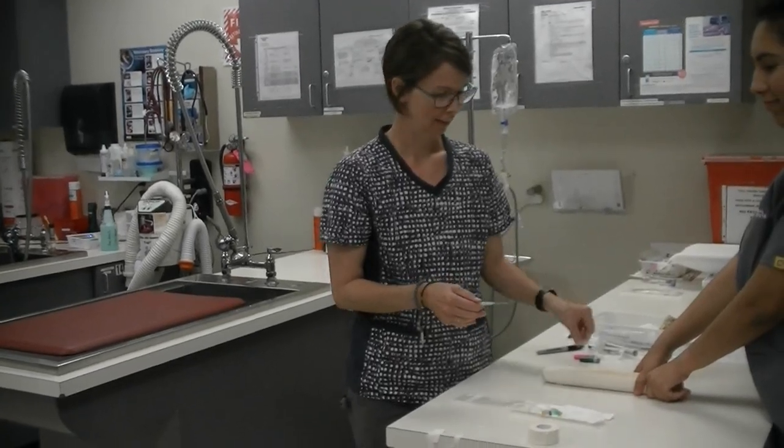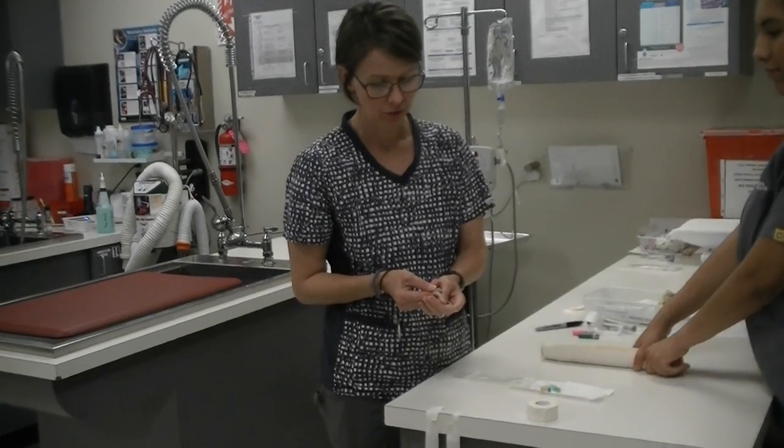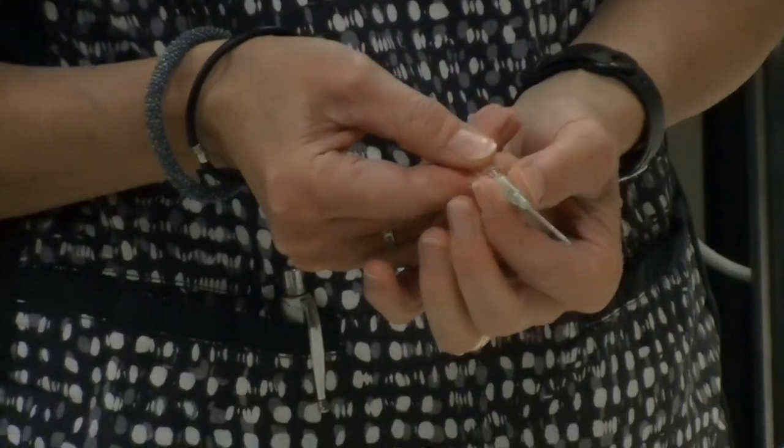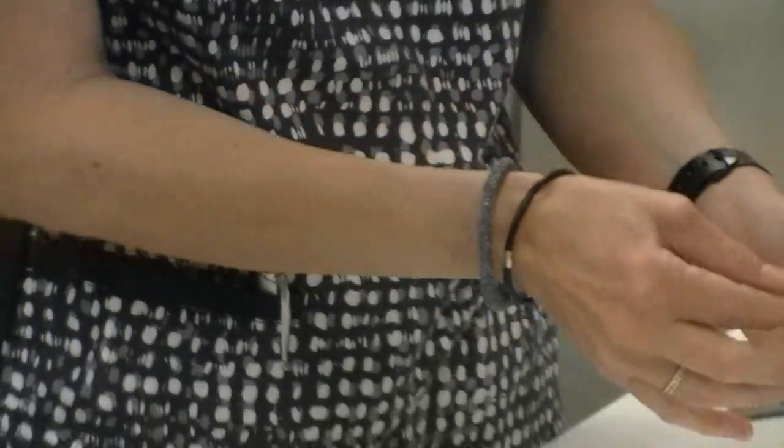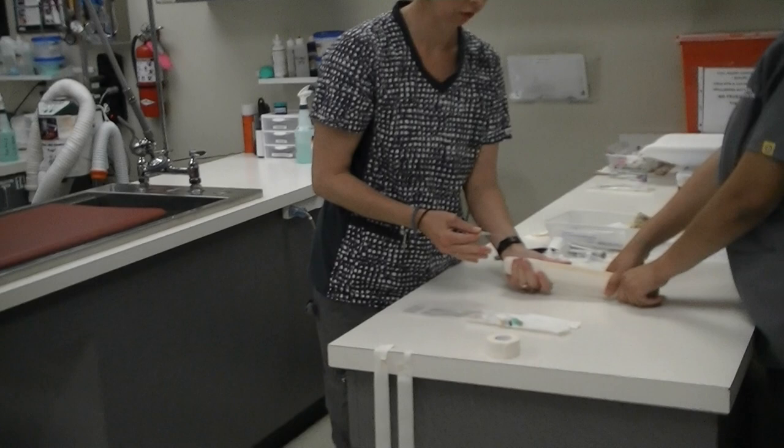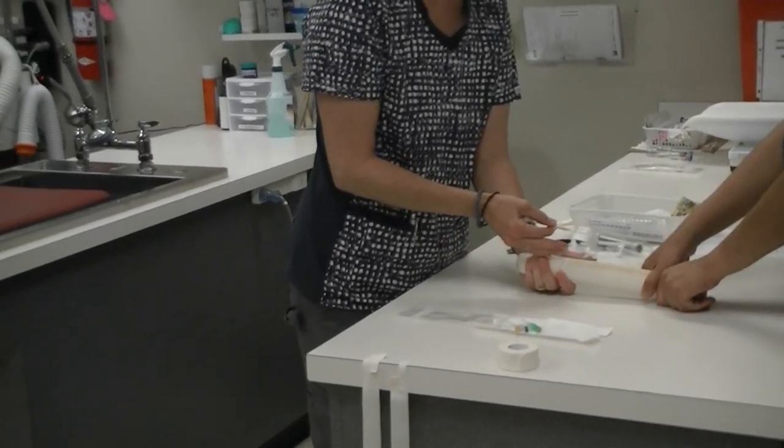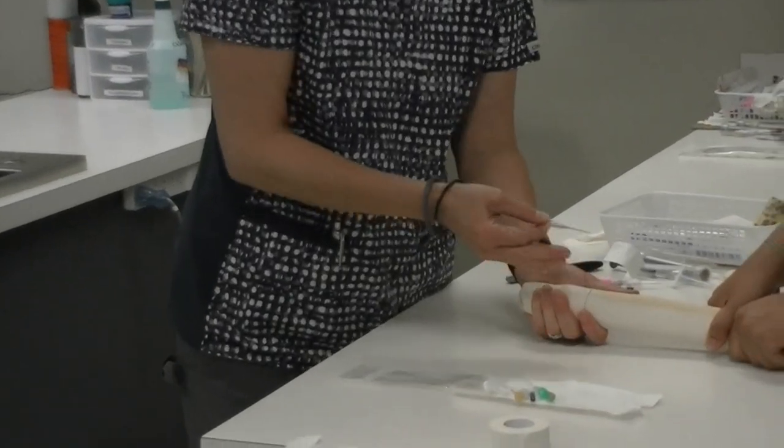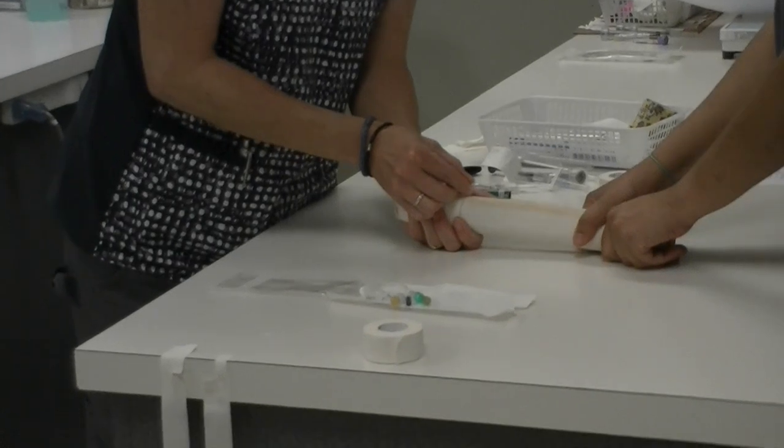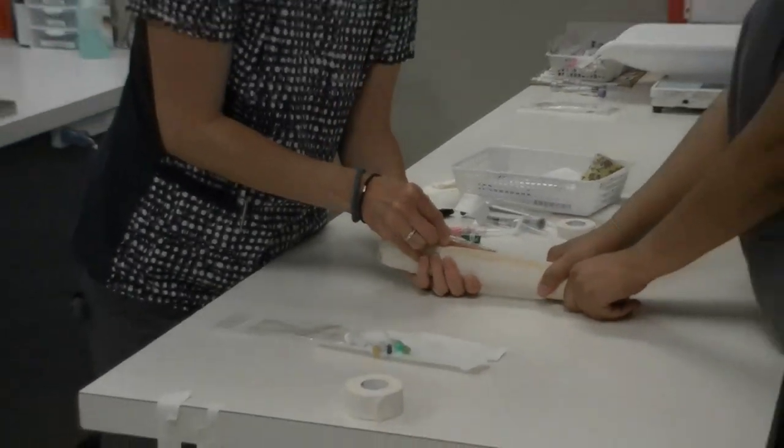Okay, so what we notice is that the stylet sticks out longer than the catheter tip end. This is important to keep in mind when catheterizing. I'm going to secure this leg in my hand and my assistant is restraining the arm as well as occluding the vein.